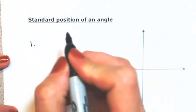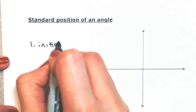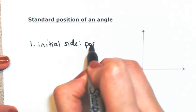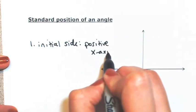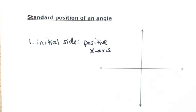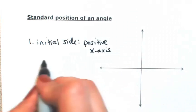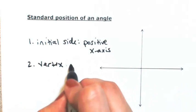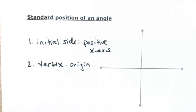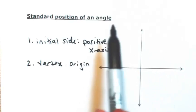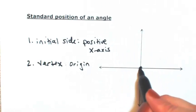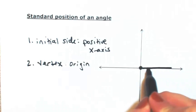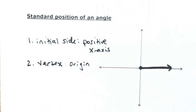And the way that this is defined is by having the initial side be the positive x-axis. And then the V point, we're going to call that the vertex, which is going to be at the origin. So where those two rays met, that's the vertex at the origin, and the initial side is the positive x-axis.